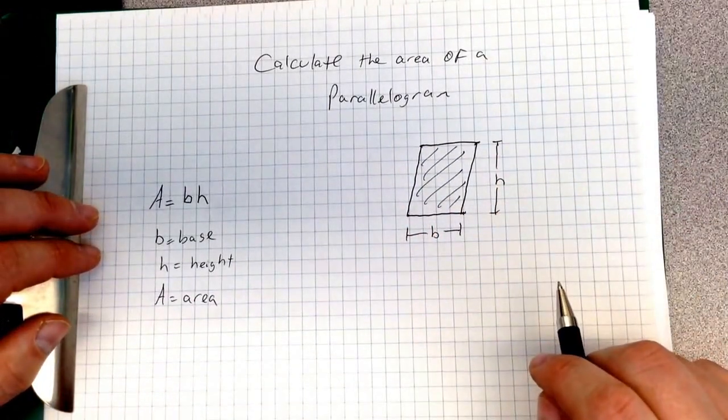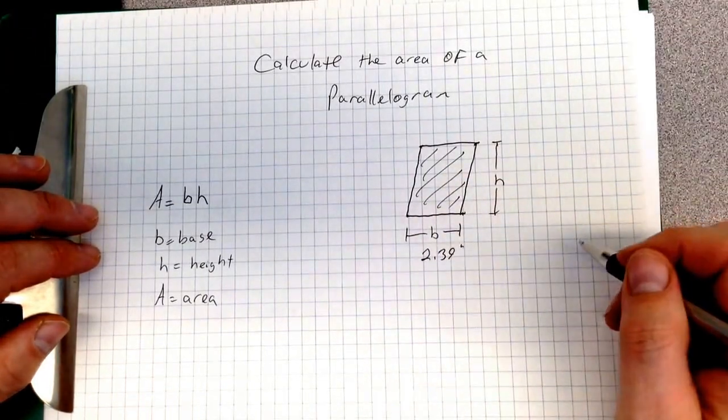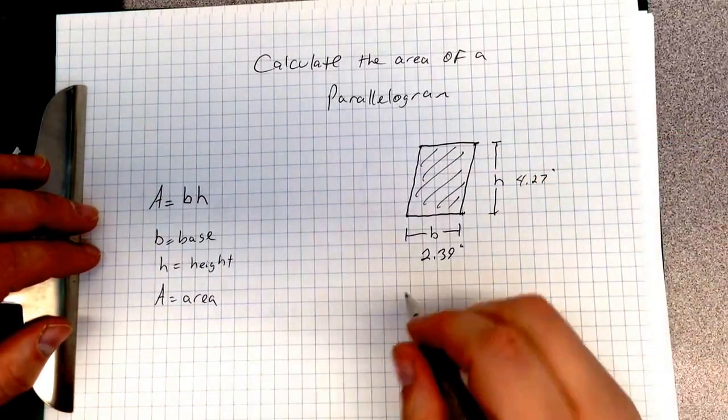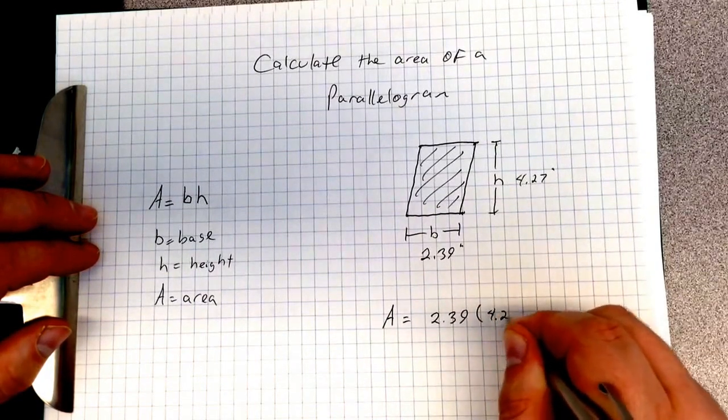So let's do some plugging and playing right here. Let's say that your base is 2.39 of an inch. Your height is 4.27 of an inch. So area equals 2.39 times 4.27.